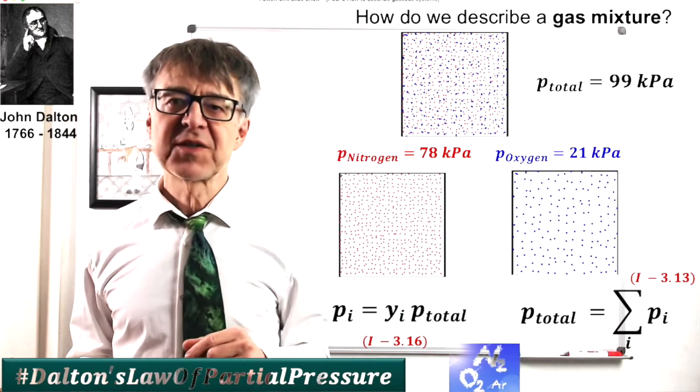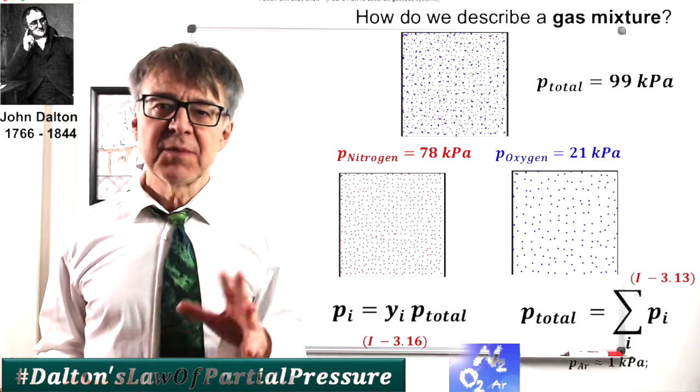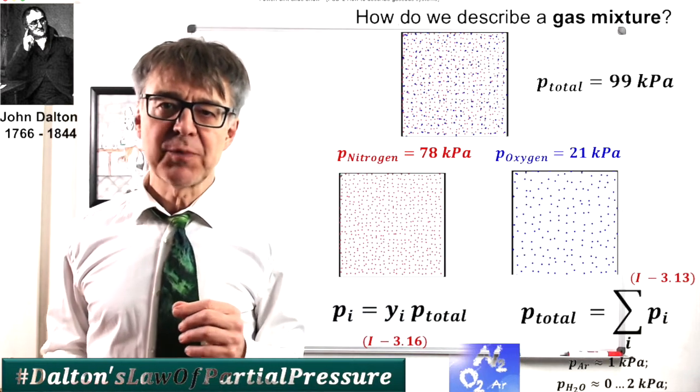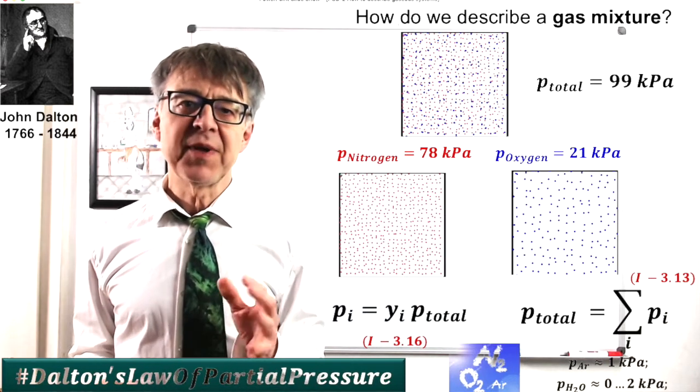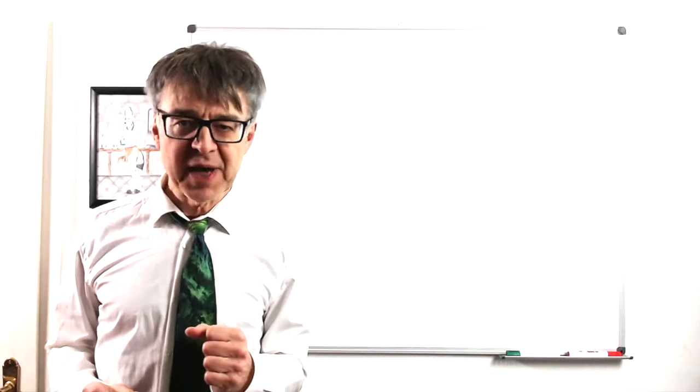By the way, air can also contain water vapor. Depending on humidity, the partial pressure of water in air will be between 0 and 2 kilopascals.